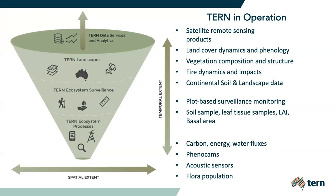The third scale of observations are intensive monitoring, which are a highly sensorized monitoring network. We call them ecosystem processes. These are more than 30 flux towers and 12 supersites distributed across the country. Typical observations made are carbon flux and water fluxes from 30 eddy covariance flux towers, biodiversity monitoring using phenocam and acoustic sensors, and human observations to measure flora and fauna population.